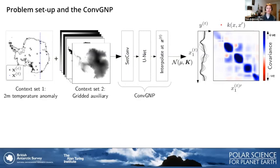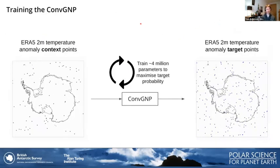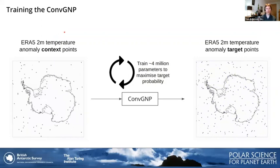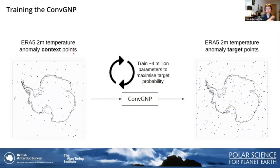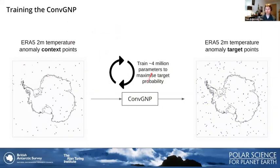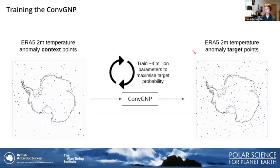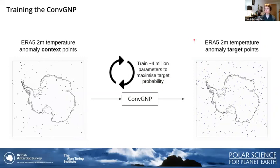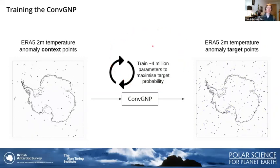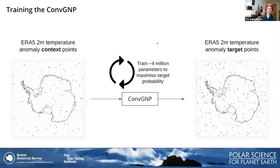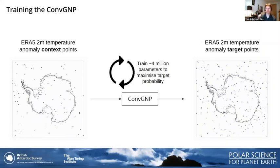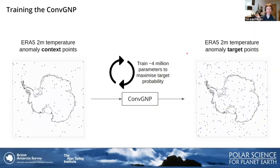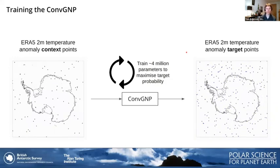That's essentially the ConvGNP at a very high level. The way we train this novel machine learning model is using ERA5 two-meter temperature data. We randomly generate context points, pass them into the model, and make the ConvGNP predict at randomly scattered target points. We then train the model — which contains four million parameters — to maximize the likelihood, i.e., the probability of the true ERA5 values at those target points.